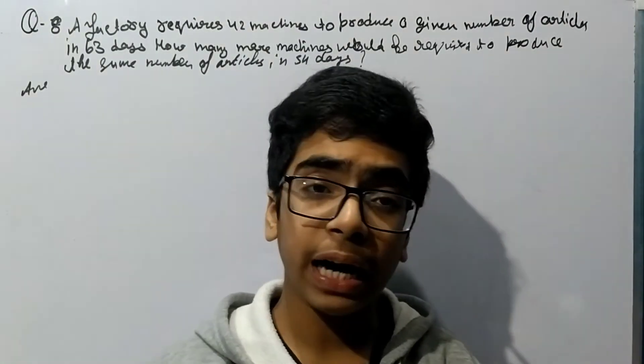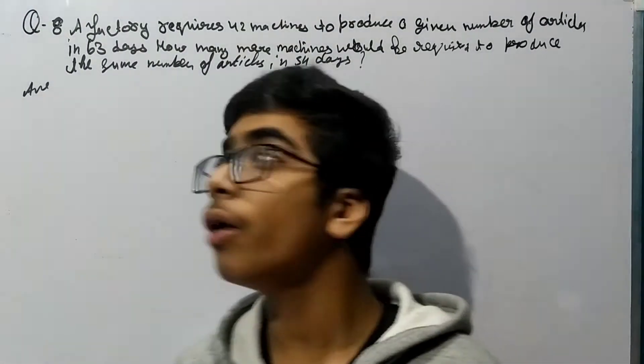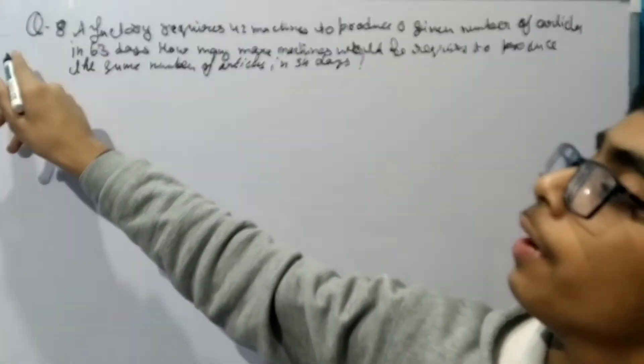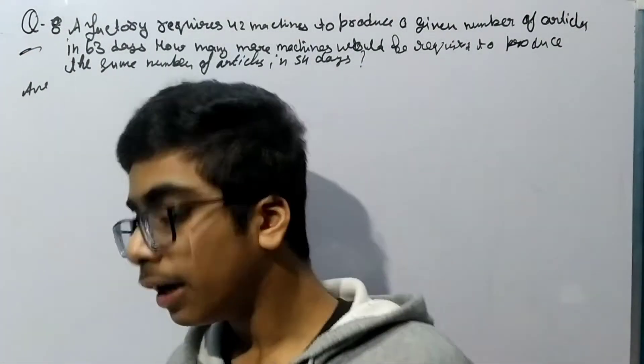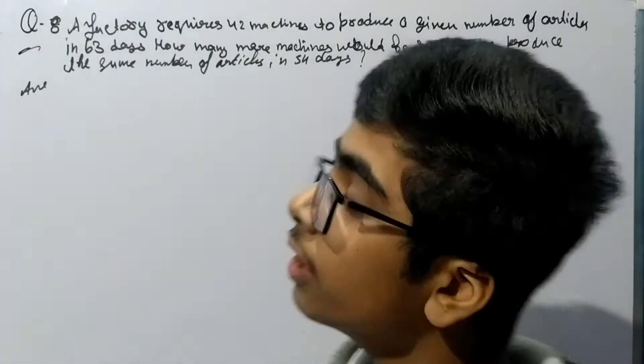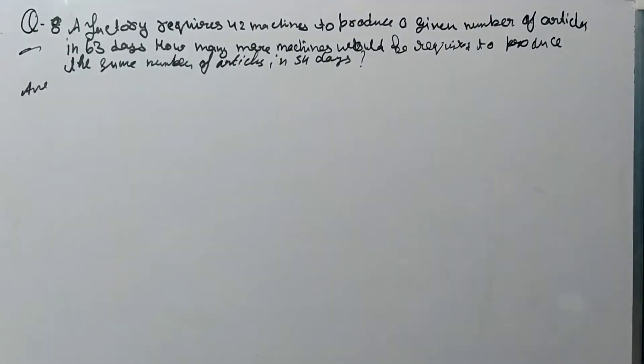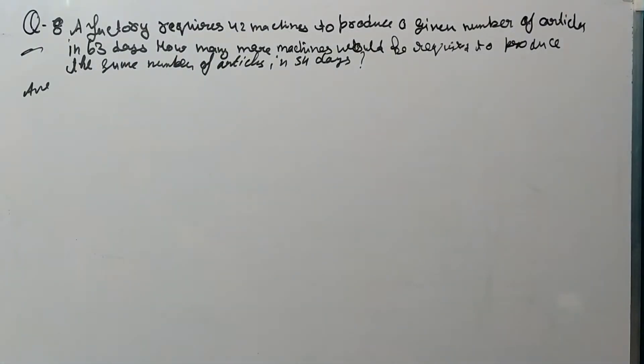Hello everyone and welcome back to Quack Cheese. In this video we are going to do question number 8 of class 8 mathematics exercise. So let's get to work. A factory requires 42 machines to produce a given number of articles in 63 days. How many more machines would be required to produce the same number of articles in 54 days?